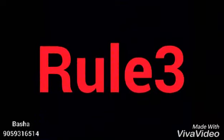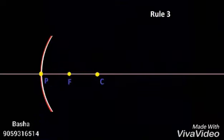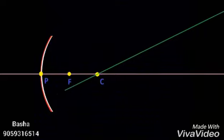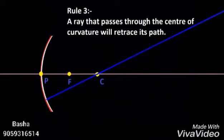Rule 3: A ray that passes through the center of curvature will again pass through the center of curvature after getting reflected — that means it retraces its path.